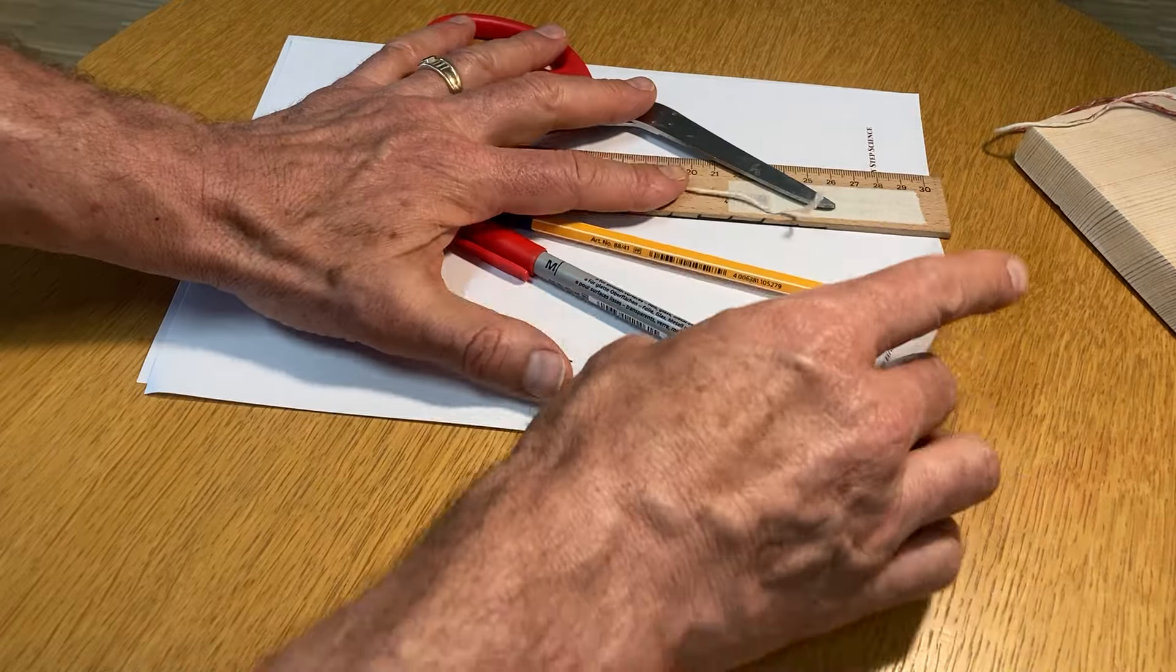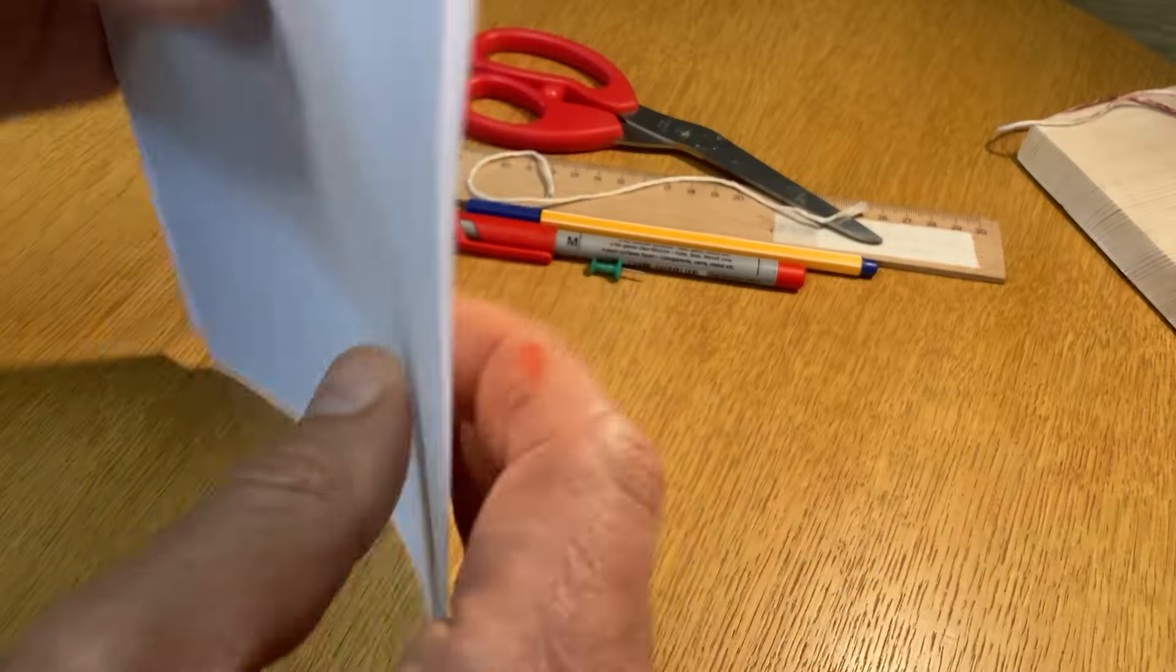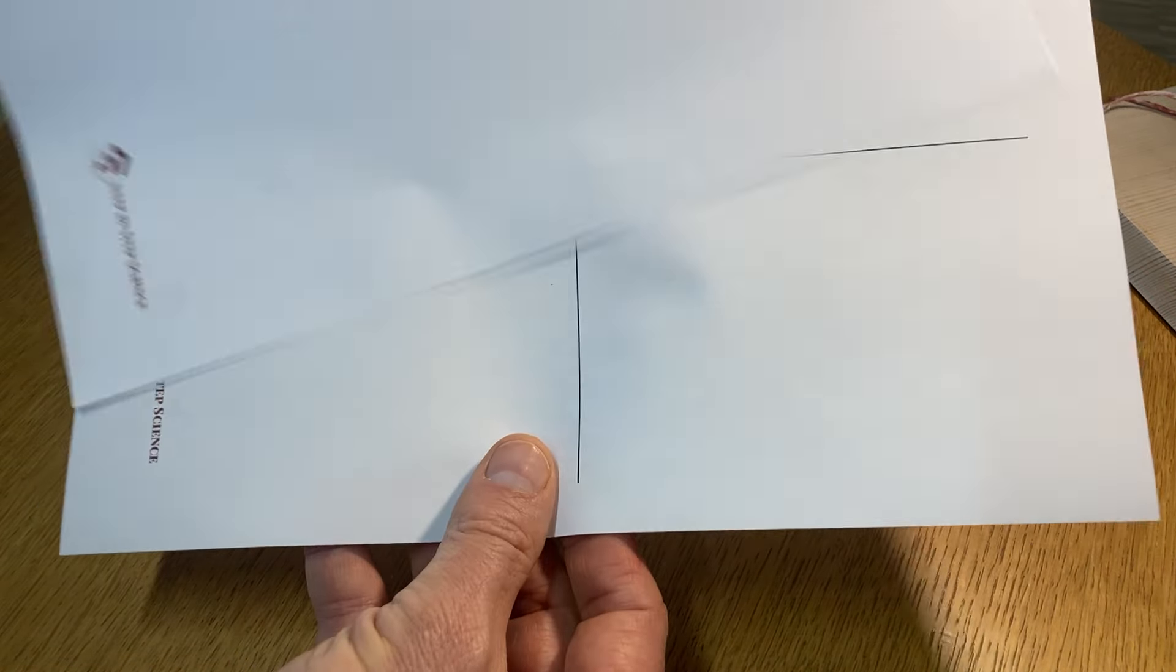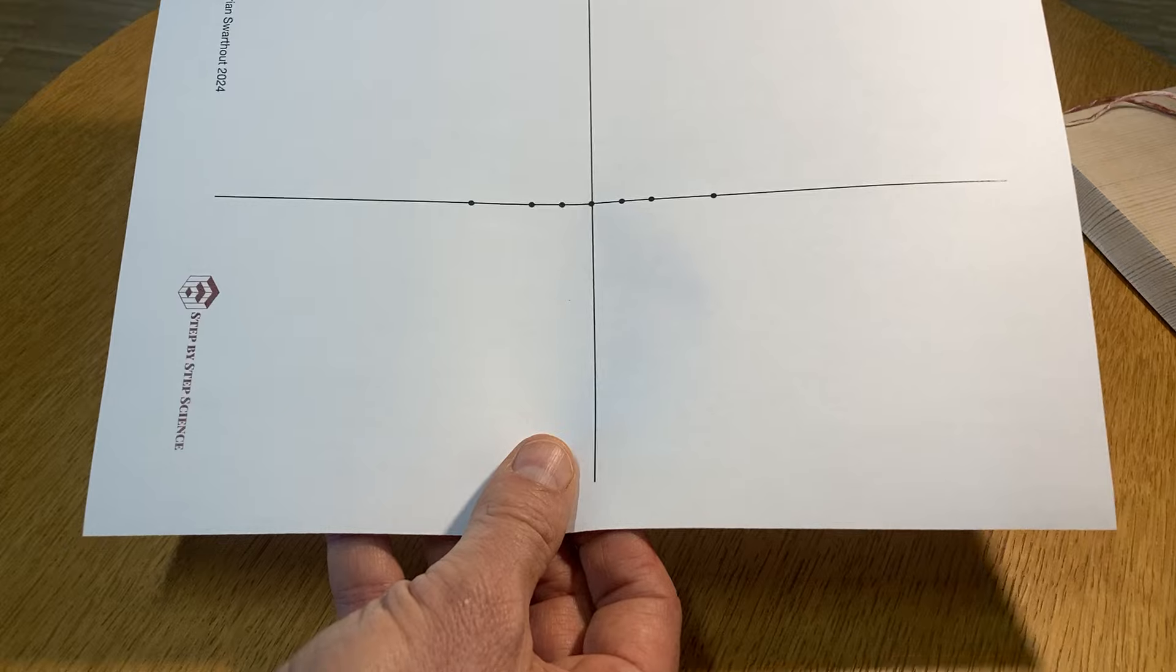The next thing I'm going to do is take my plain piece of white paper and draw a line through the center of the paper this way and through the center of the paper this way so it looks something like that.